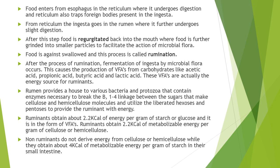As ruminants consume plants made up of cellulose and hemicellulose, the enzymes of the microbial flora break the beta-1,4 linkage present between the sugars that make cellulose and hemicellulose molecules. This breakdown causes the liberation of hexoses and pentoses, which are utilized by the microbial flora of the rumen, converting them into volatile fatty acids and eventually providing the ruminant with energy.